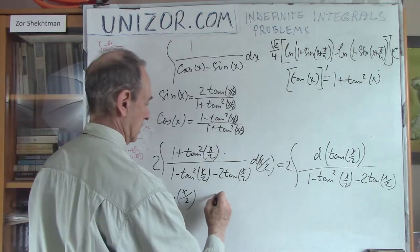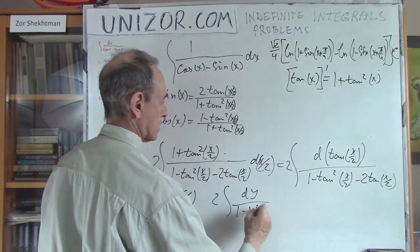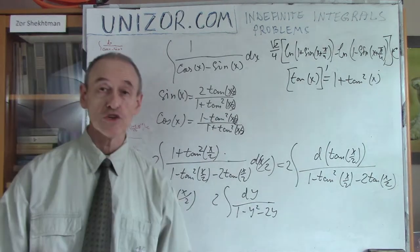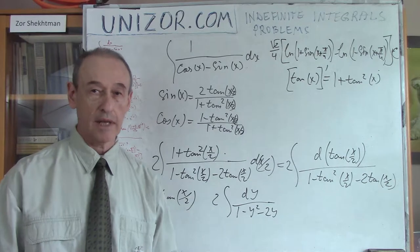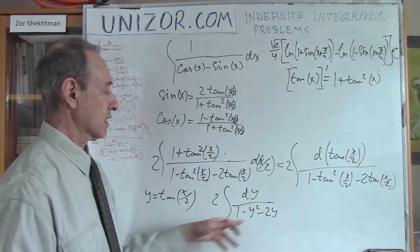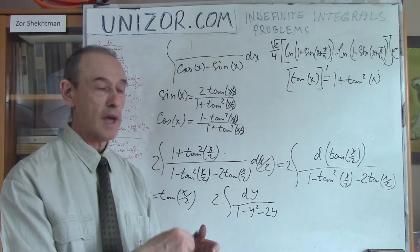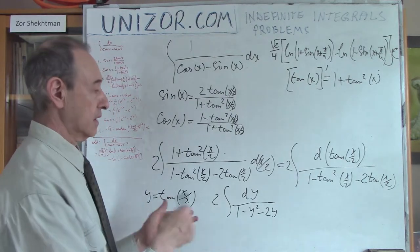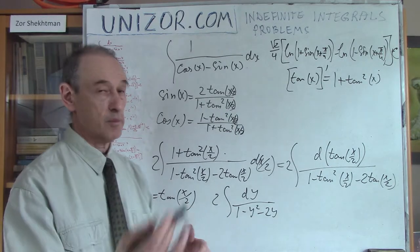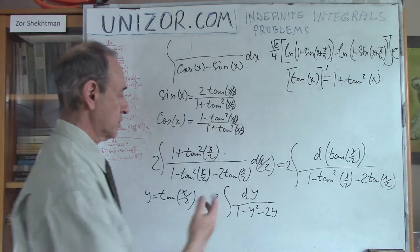With the obvious substitution y = tan(x/2), this now looks like 2∫ dy / (1 − y² − 2y), which is a rational function that we basically know how to handle. The denominator is a quadratic polynomial, which means I can always express it as (y − something)(y − something) and present the integral as a sum of two integrals where I have only first-degree polynomials on the bottom.